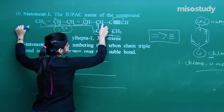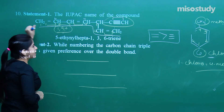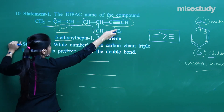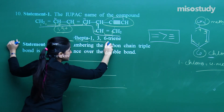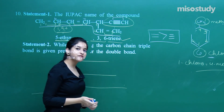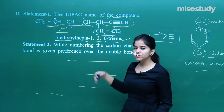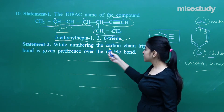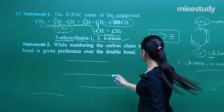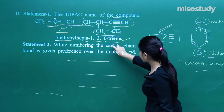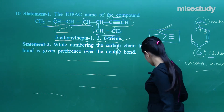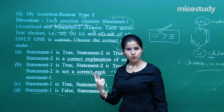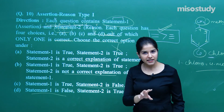Here I have got ethynyl, so that will be treated as a substituent — 5-ethynyl on to the 5th position. I have got hepta-1,3,6-triene. That is the correct option. Now let us check whether statement 2 is true or false: 'While numbering the carbon chain, triple bond is given preference over the double bond.' Is it correct? Not at all — always the double bond is given preference, not the triple bond. So statement 2 is false. The option we need to choose is: statement 1 is true, statement 2 is false — C is the answer.